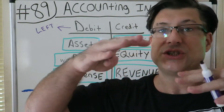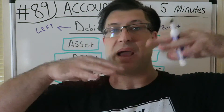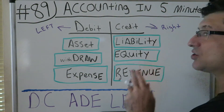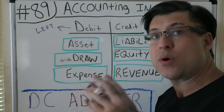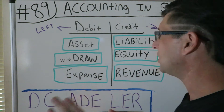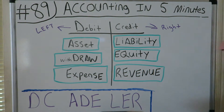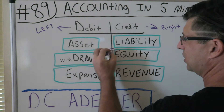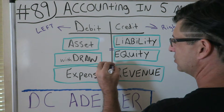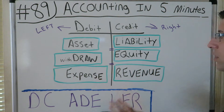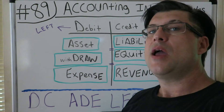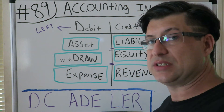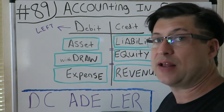Since we have balance sheets and everything balances, debits are always going to equal credits — always. That's very important. Every transaction has a debit and a credit, and they always equal.